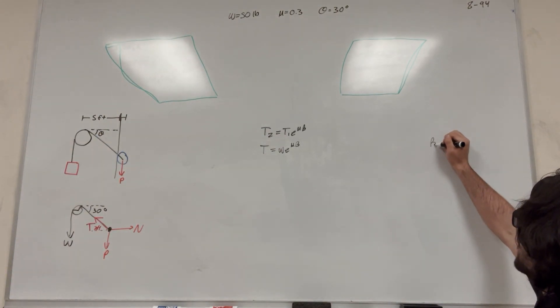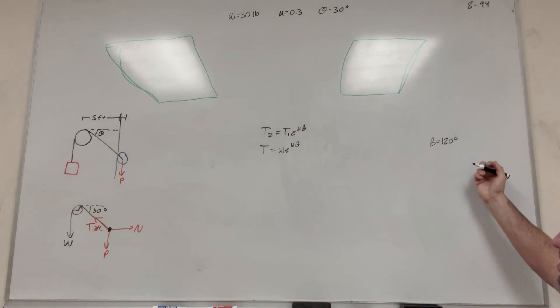So we know that beta is equal to 120 degrees, like we said, 90 plus 30. But we have to convert this to radians. So converting to radians, we do pi over 180 is what we multiply it by because 180 degrees is equal to 1 pi radian. And if you do this, you get 2 thirds pi.